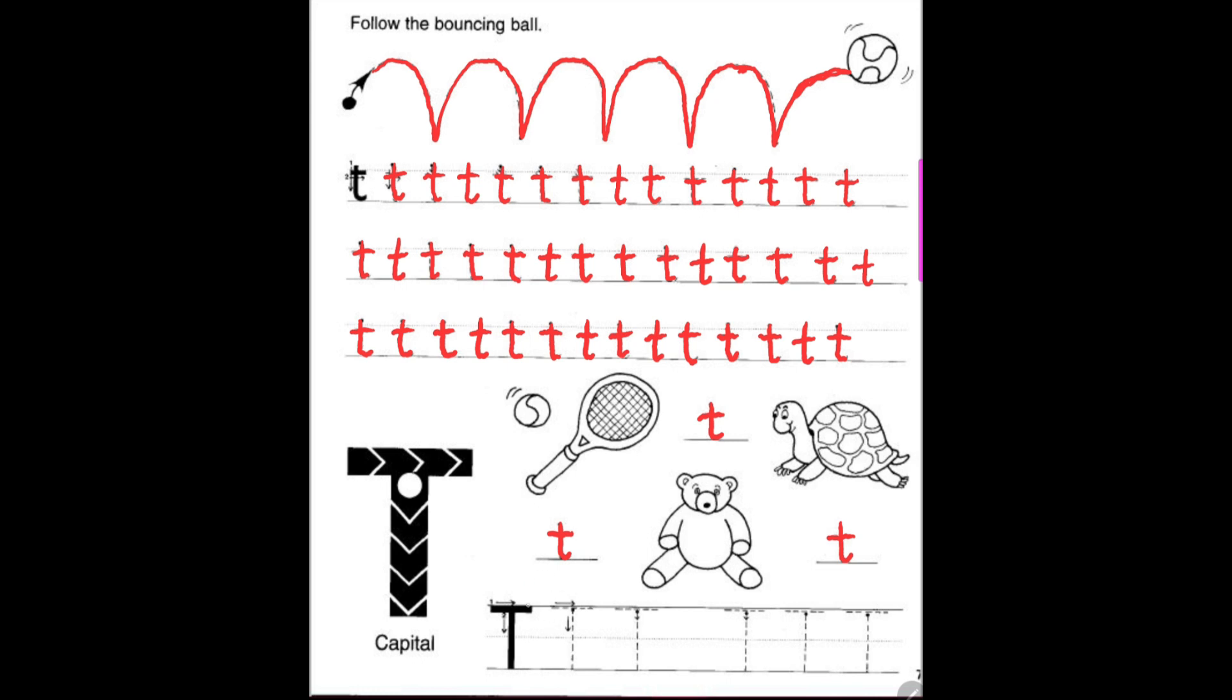Let's go ahead and do our capital T. Straight line down and then line across the top. It doesn't matter if you go left to right or right to left. I write right to left on the top line. You can do it any way you want. So straight line down and across the top.